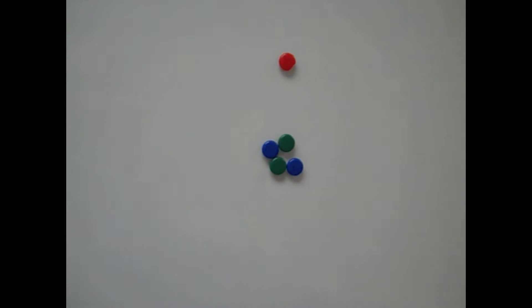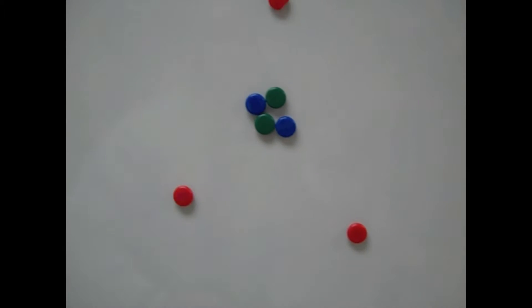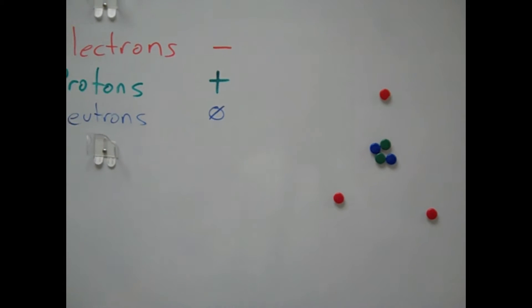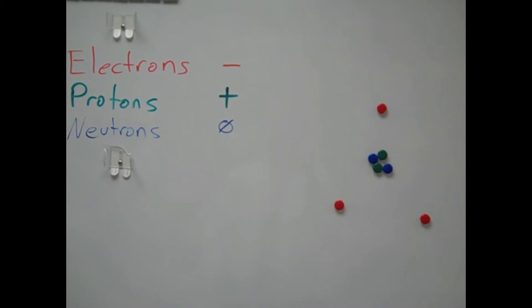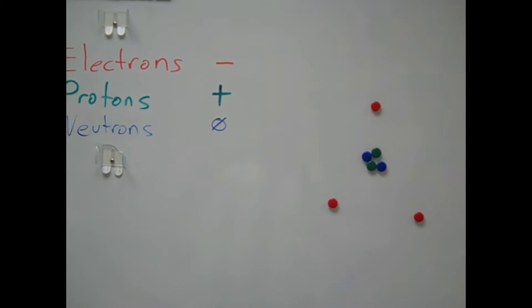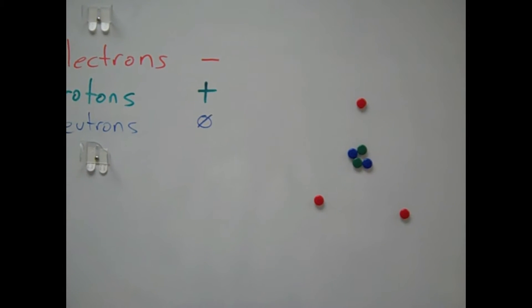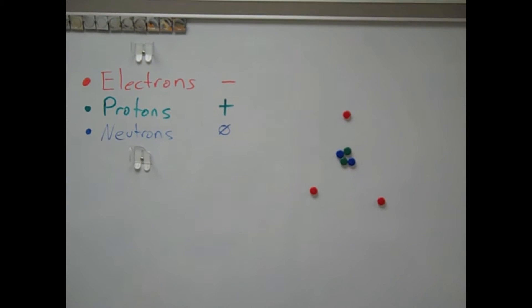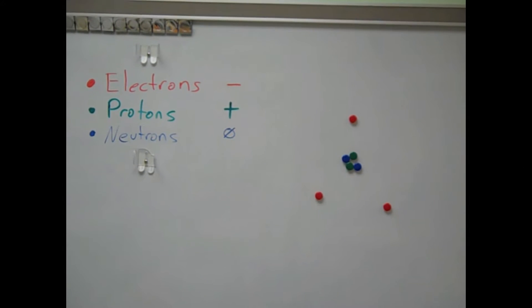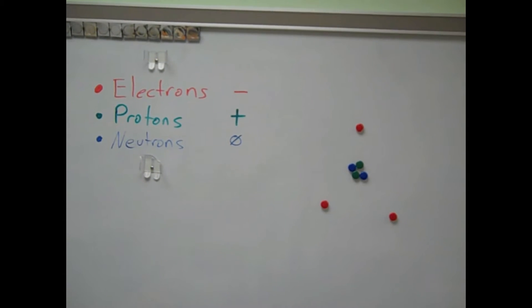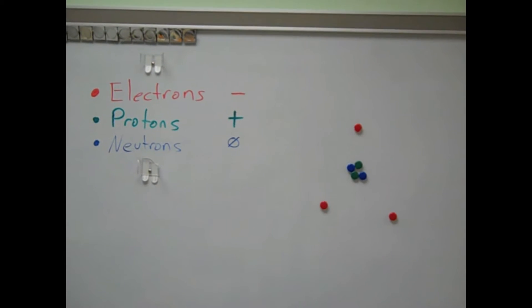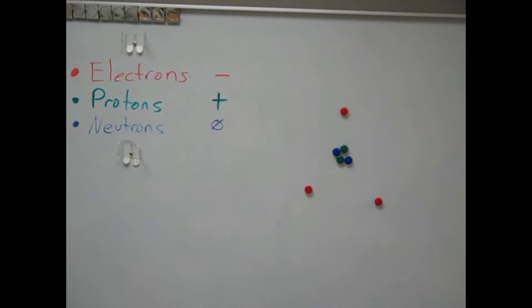But what happens if instead of losing an electron, it gains an electron? Another atom gave up its electron to this atom. Now you can see there are three electrons and only two protons. This is causing another imbalance, and now this atom is negatively charged. It's this imbalance between electrons and protons that causes static electricity. When an atom has either more electrons or more protons, it becomes charged — either negatively or positively.